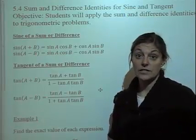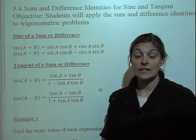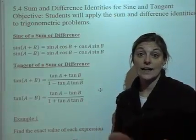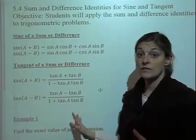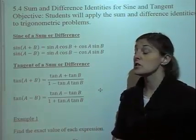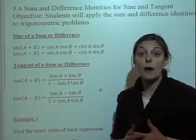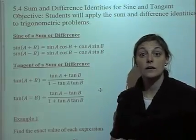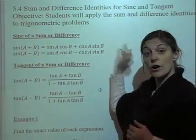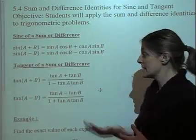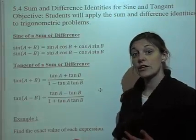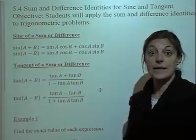We've already talked about sums and difference identities for cosine, so now we're going to talk about the sum and difference identities for sine and tangent. You don't have to memorize these identities because they are on your formula sheet, but you have to be able to recognize them quickly so you can complete the problems quickly. Here are your sine identities, and here are your tangent identities, and now we're going to take a look at using them in some examples.